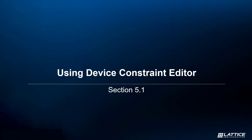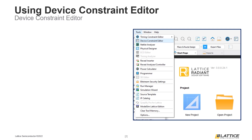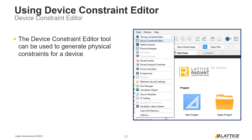In this section of the video series, we will introduce Radiant's Device Constraint Editor and how it can be used to modify and create physical constraints for a project. As mentioned in the previous chapter, once a design has completed synthesis, the next step in the constraint creation flow is to create the physical constraints for a design. These physical constraints are used during place and route to determine how a design is implemented on a device. A useful feature of Radiant is that it can be used to generate physical constraints using its Device Constraint Editor Tool.